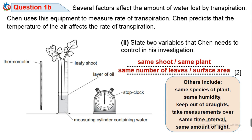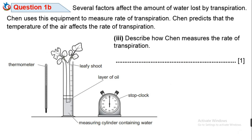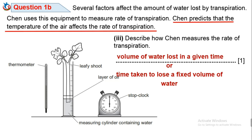Question 1b3: Describe how Chen measures the rate of transpiration. The rate at which water is lost can be measured in two ways: number one, by measuring the volume of water lost in a given time; or number two, by measuring the time taken to lose a fixed volume of water.